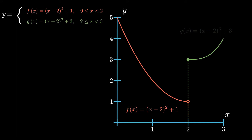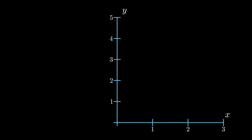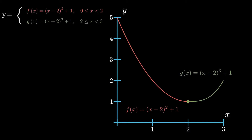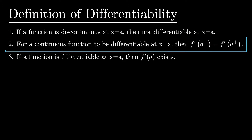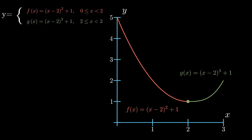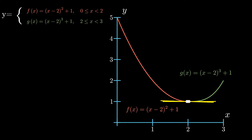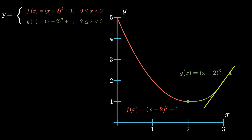If we consider this function with its vertical shift down, we've got a new function — instead of having plus 3 at the end of it, we've just got a plus 1. The second part of the definition says the derivative at the point x equals a, in this case x equals 2, must be equal from both ends. You can think of this as the slope matches from both sides, which tells us we've got a curve that is nice and smooth and continuous.